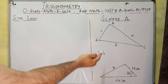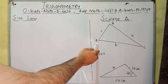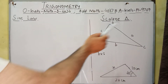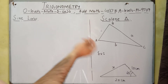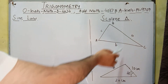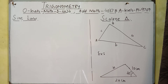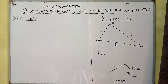This is a scalene triangle and we have three angles: capital A, capital B, and capital C. We have three sides: small a, small b, and small c. So small a, b, c are sides and capital A, B, C are angles in this scalene triangle.